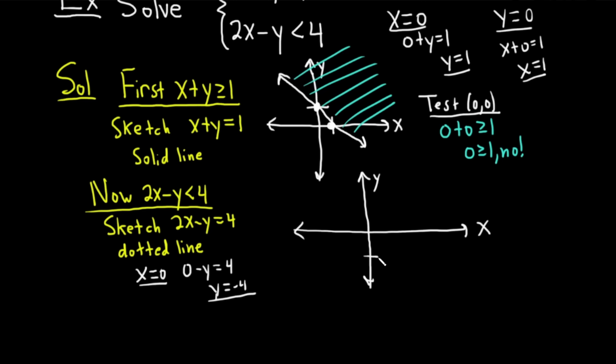Now let's do the same thing with y. When y is 0, we get 2x minus 0 equals 4, so 2x equals 4, so x equals 2. When y is 0, x is 2, so this is 2 right here. This is a dotted line because we have a less than. Beautiful, really nice.